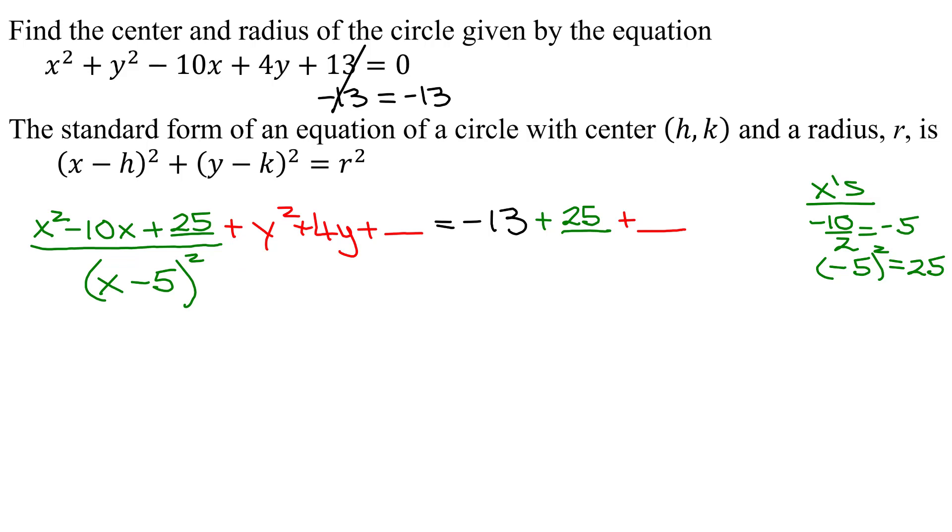Repeating the process for the y's, the coefficient of the linear term, the y term, is 4. Take 4, divide it by 2, you get 2. Then take 2 and square it, you get 4. The squared term is the number you add to both sides. You're going to get a perfect square trinomial that factors into y plus half of this coefficient, so half of 4 is 2, giving us (y + 2)².